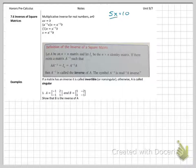You guys know you would divide both sides by 5 and you get the answer. But in matrices, we don't divide. So instead, we multiply by the inverse.